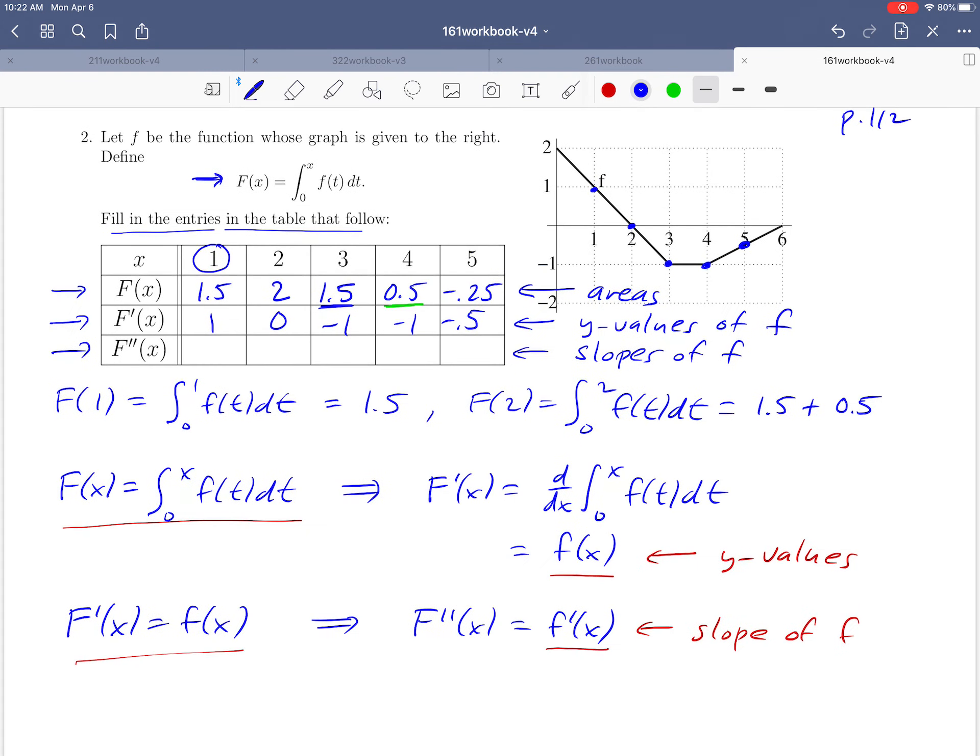At x=1, F''(1) is the slope of f at x=1. This point lies on a straight line with rise over run of -1/1, so the slope is -1. At x=2, we're still on the same line, so F''(2) is also -1.